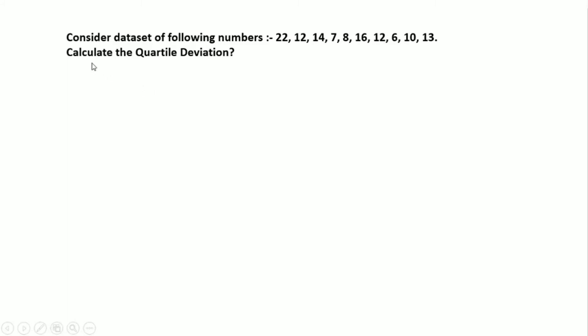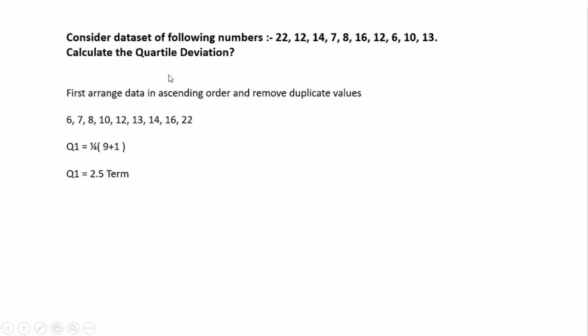Consider a dataset of the following numbers: 22, 12, 14, 7, 8, 16, 12, 6, 10, 13. There are 10 numbers total, and 12 is a duplicate value. We are going to calculate the quartile deviation. First, we arrange the data in ascending order and remove the duplicate value of 12, giving us nine values.